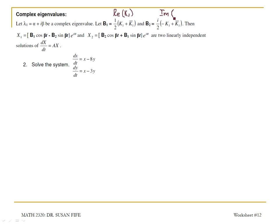It gives you just the imaginary part of that eigenvector. So rather than using these formulas, B1 is one half k1 plus k1 bar, and B2 is i over 2 times negative k1 plus k1 bar, we could just say that B1 is the real part of the eigenvector and B2 is the imaginary part of that eigenvector.